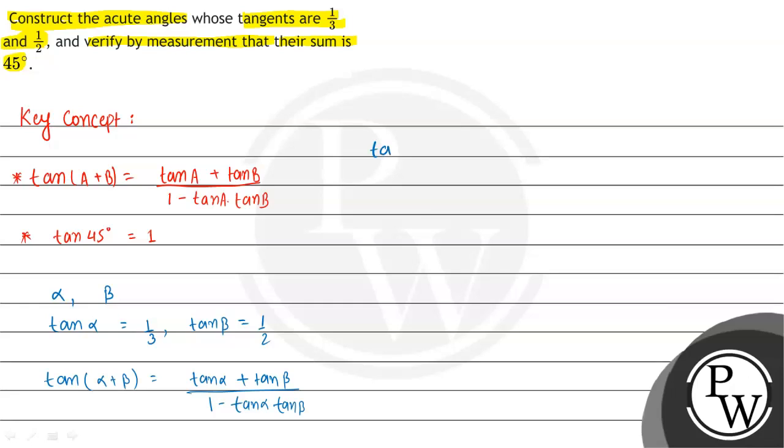If we put all these values, we will get tan(alpha plus beta) equals tan alpha value 1/3 plus tan beta value 1/2, divided by 1 minus 1/3 into 1/2.